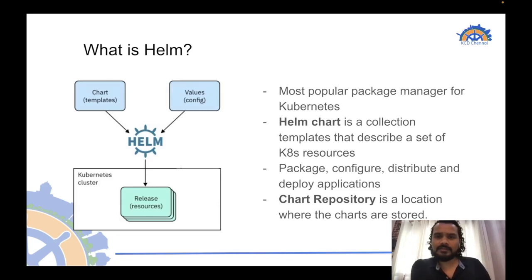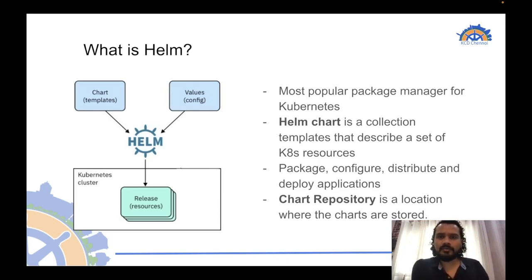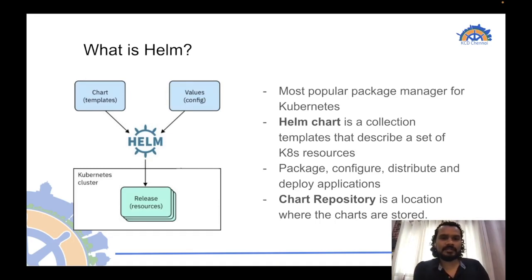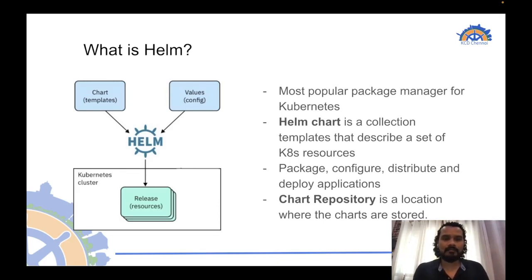Chart repositories are where we host Helm charts. There are different chart repositories maintained by different maintainers. You can add those repositories when using Helm and use the already existing charts. You can also create your own custom charts and deploy your own custom applications. On the left is a simplistic representation of how Helm works — templates and values are rendered through the Helm templating engine, generating Kubernetes manifests which get applied to the cluster.